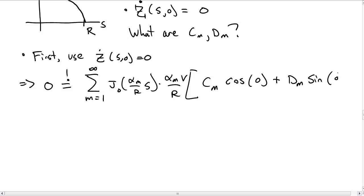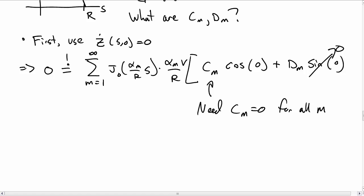And the cosine becomes a minus sine. That one we don't really care about because sine of 0 is 0. At cosine of 0 you get 1, so that means you need c sub m to be 0 if you really want this sum to be 0 for all m. So we have to put c sub m equal to 0.